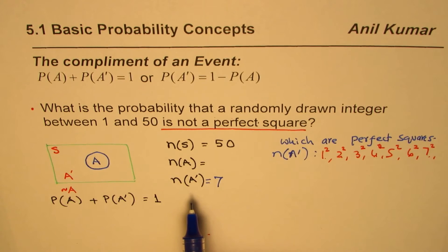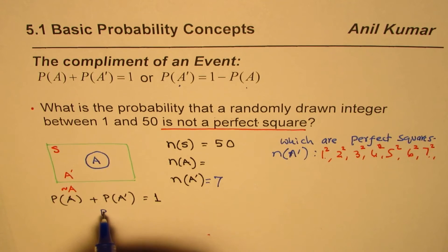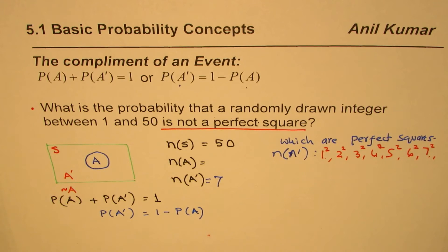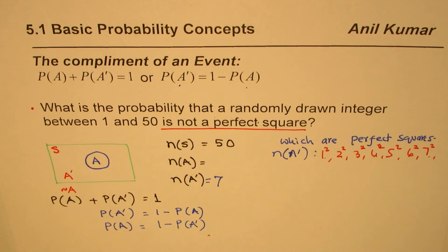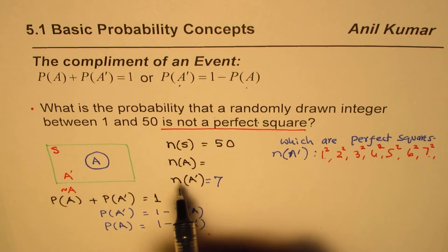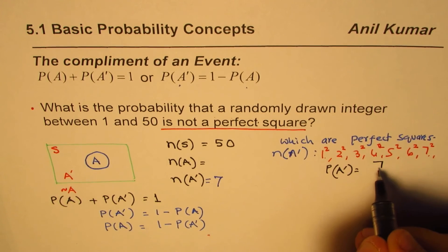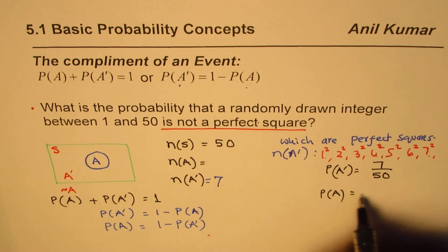This tells us the number of outcomes favorable to perfect squares is 7. We can find the probability of drawing a perfect square, and then use its complement with the formula P(A') = 1 − P(A). So the probability of getting a perfect square is 7 out of 50.